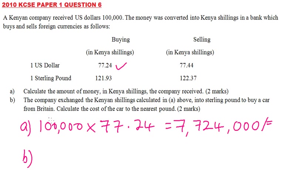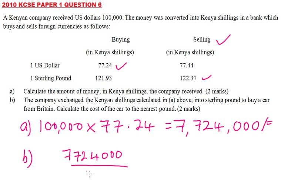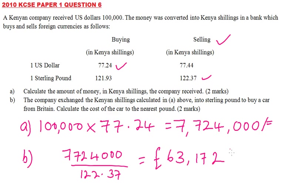Part B: the company wants to exchange the Kenyan shillings into British pounds. In this case, the bank is selling, so you divide the amount from part A by the selling price of the bank. That is 7,724,000 divided by 122.37, which gives you 63,172 British pounds. That is the amount of pounds the company will receive after exchanging the Kenyan shillings into British pounds.